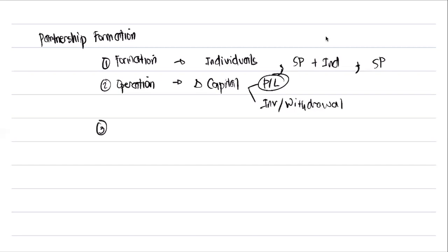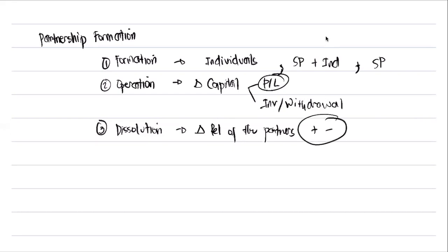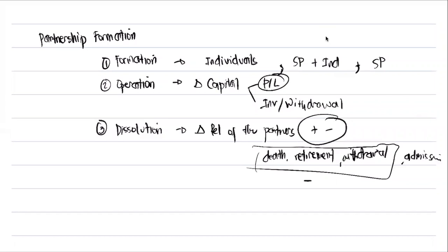Third, we have dissolution. In dissolution, there is a change in the relationship of the partners — partners will either decrease or increase. There might be a partner going out or a partner going in. This increase or decrease is brought by death, retirement, withdrawal, and admission. A decrease is caused by death, retirement, or withdrawal.